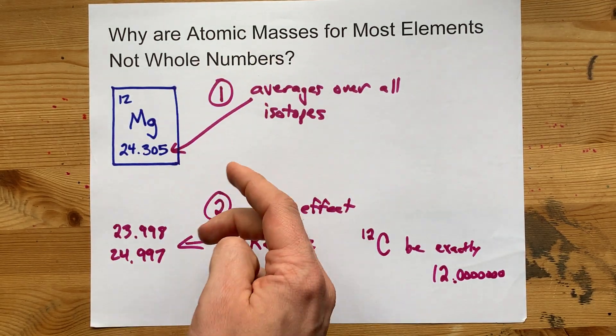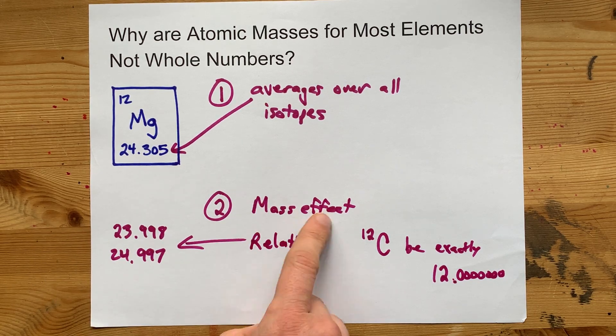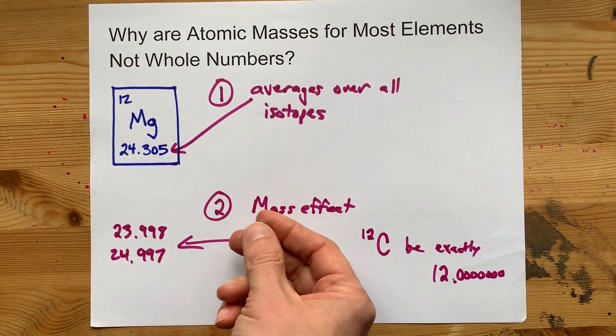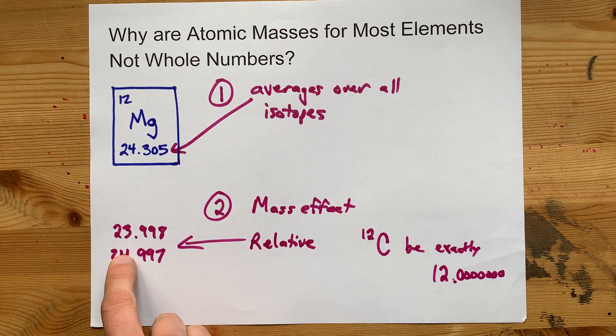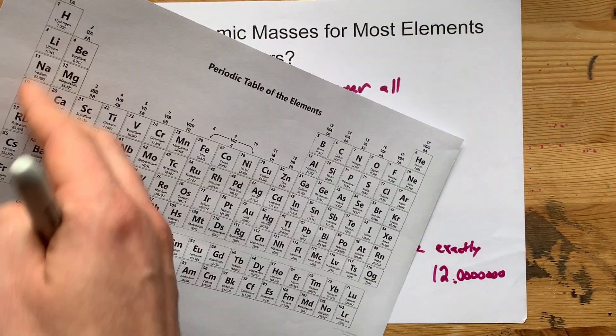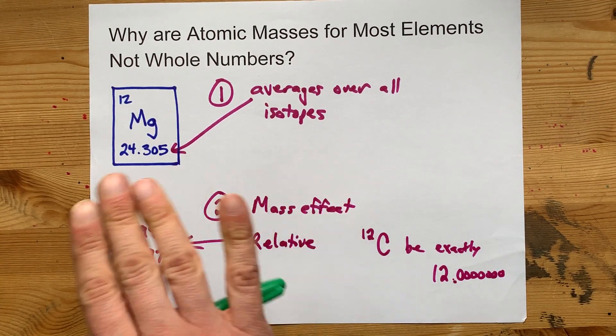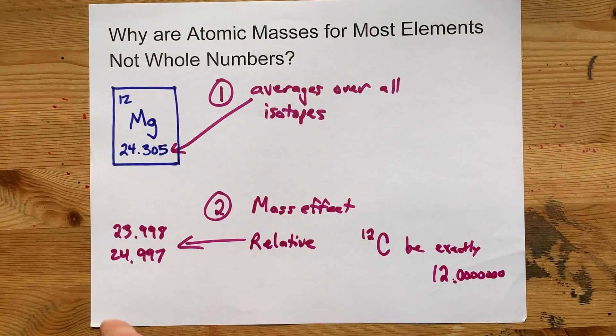or whether it's about each isotope individually, in which case they might be talking about the mass effect, or they might be talking about the fact that all of these masses on the periodic table of all the isotopes that make up each one of these are all relative to carbon-12, simply because that's how chemists defined it.